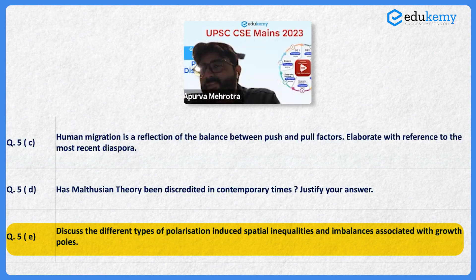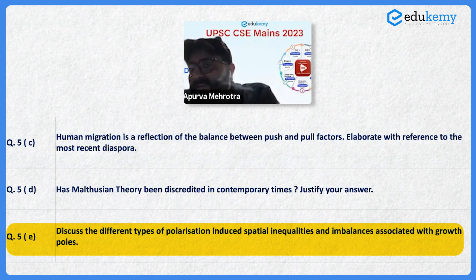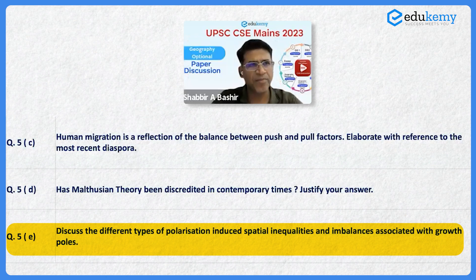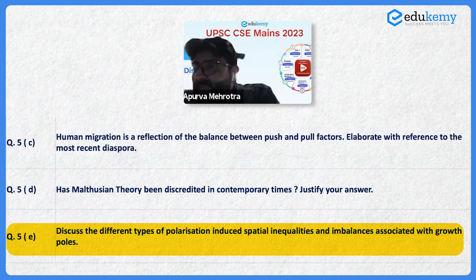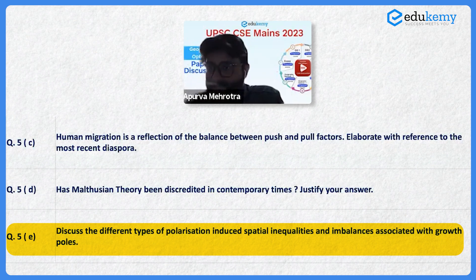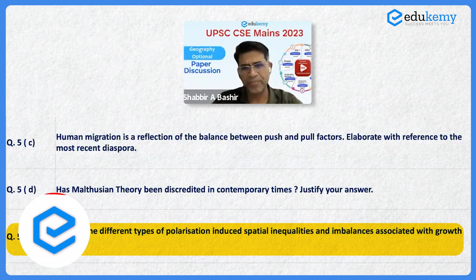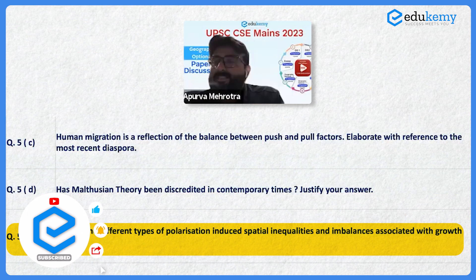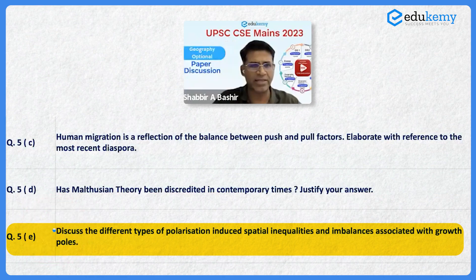We could also include an important aspect: the development stage of the country is a very important factor that leads to polarization. In developing countries, the government often has a capitalistic outlook and invests only in certain regions, while other regions remain underdeveloped — looking into their own return on investment. This is a deliberate imbalance inducement, because we focus on some centers and then polarize.